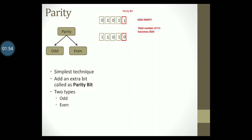You may have guessed by now what should be done for even parity. Let's take the same examples. Suppose you have 4 data bits 0 1 0 1. Insert another bit and call it as the parity bit. Assume now that we are following the even parity system. For even parity, we will set this parity bit to 0 so that the total number of ones in the codeword along with the parity bit becomes even.